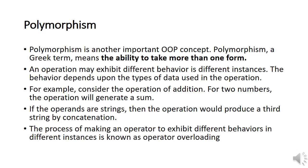The third important concept of OOP is polymorphism. Polymorphism means the ability to take more than one form — an operation may exhibit different behaviors at different instances. The behavior depends on the type of data used. For example, the '+' operator adds two numbers to give a sum, but if the operands are strings, it concatenates them. So the '+' operator behaves differently when operands are different.